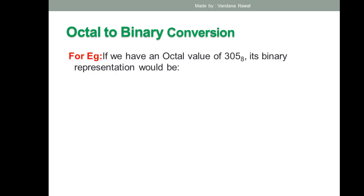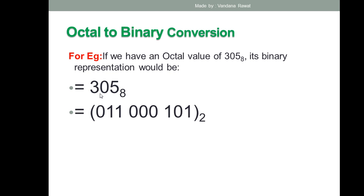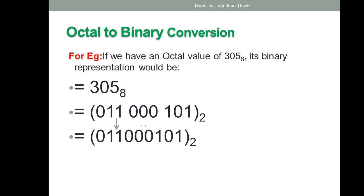Next example: the octal number 305 (base 8). Its binary representation: 3 = 011, 0 = 000, 5 = 101. Grouping them together gives 011000101 (base 2). You write base 2 in the answer because you have converted the octal number into binary. I hope this is clear — how to convert any octal number into binary.